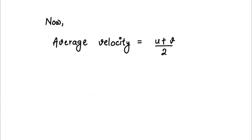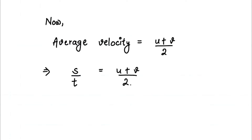The average of those two velocities is u plus v divided by 2. We can also write average velocity as total distance traveled divided by total time taken, and we have s equals u plus v divided by 2 over here.